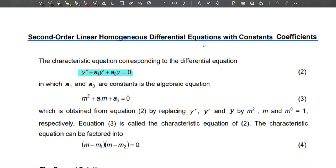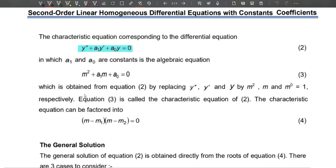Next, let's do a bit of a review on second-order linear homogeneous differential equations with constant coefficients. The characteristic equation corresponding to the differential equation would be y'' + a_1 y' + a_0 y = 0. We will always rewrite it as m² + a_1 m + a_0 = 0, which we obtain by replacing y'', y', and y by m², m, and 1 respectively. Equation 3 is called the characteristic equation of equation 2.